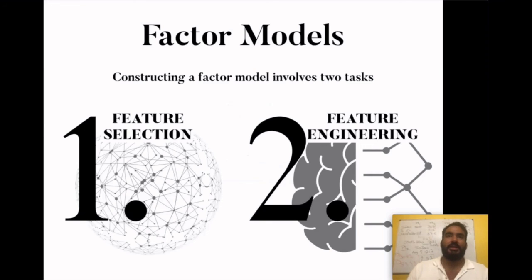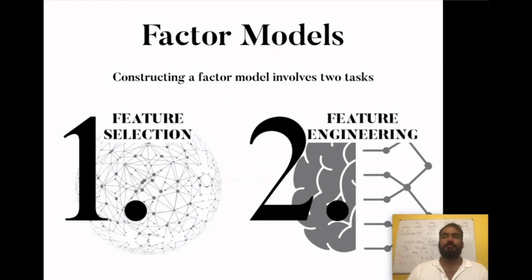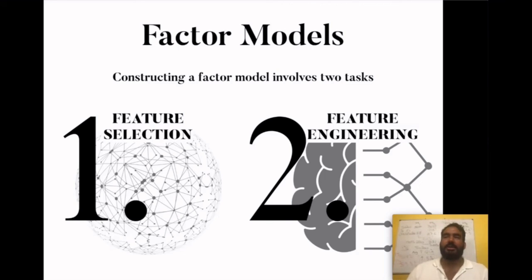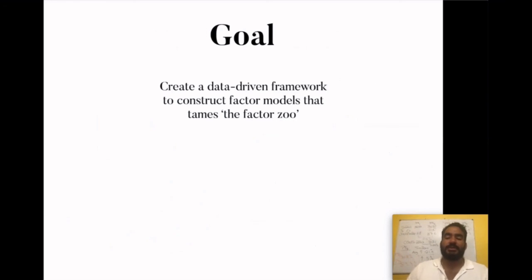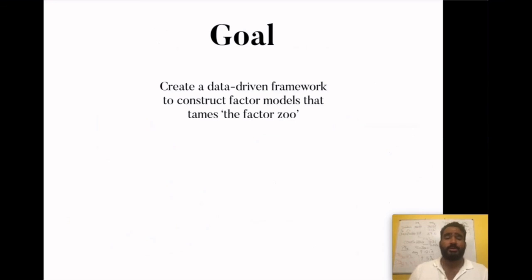In the industry, people either use a set of factors selected a priori or take all factors they have and use those in their model, which may cause overfitting and poor out-of-sample accuracy. They also typically just use a linear model without considering nonlinear alternatives. There is what's called the factor zoo — about 300-plus factors identified to have statistically significant effects on returns. Using all of them tends to cause overfitting. We want to create a framework that tames this factor zoo in a data-driven fashion using a two-stage framework.